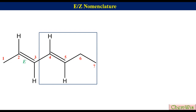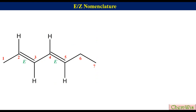Similarly for the C4-C5 double bond: on C4 the priority of the alkenyl residue is 1 and that of H is 2. Since higher priority groups are on opposite sides of the alkene, the configuration of this alkene will also be E. Since this alkene is hepta-2,4-diene, for the complete IUPAC name we put the configuration at C2 and C4 in parentheses separated by a comma before the name of the alkene. So the name is (2E,4E)-hepta-2,4-diene.